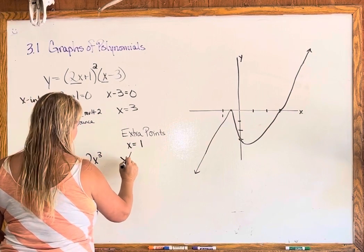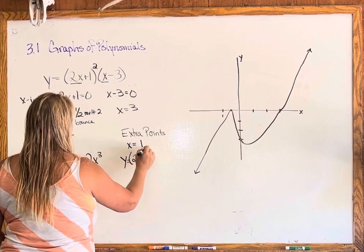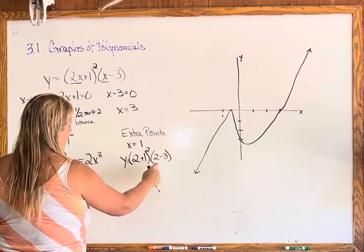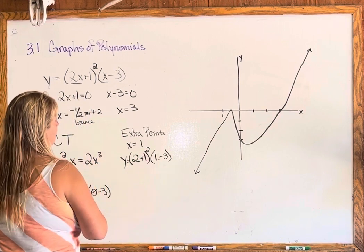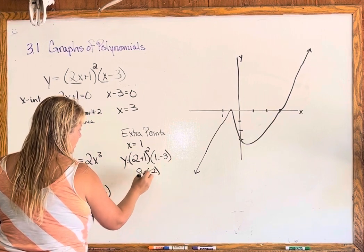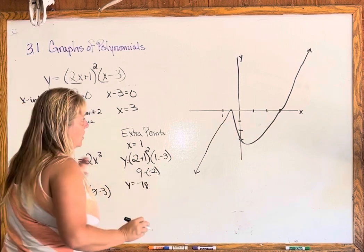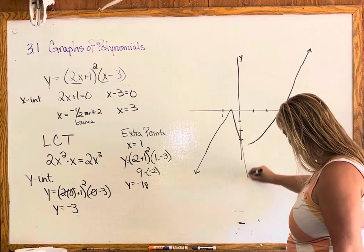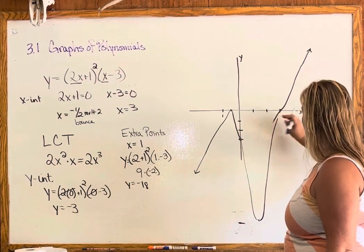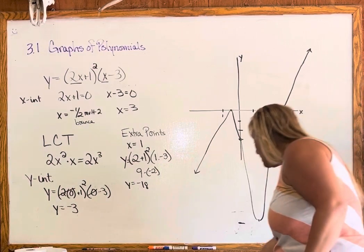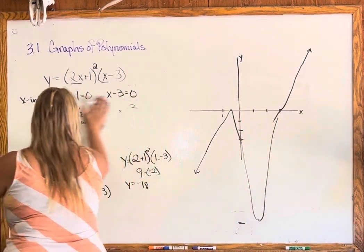With x equal to 1: y equals 2 times (1+1) squared times (1-3), which is 2 times 3 squared times negative 2 — wait, that's (1+1) squared which is 4, times negative 2. Actually, y equals 2 times 3 squared times negative 2, giving us 9 times negative 2, so y is negative 18. So the graph goes way far down at x=1. You can get more information by plugging in extra points, but the key things are the leading coefficient test, y-intercept, and x-intercepts.